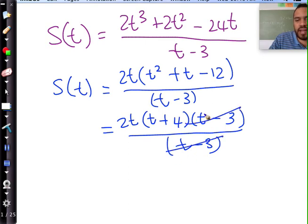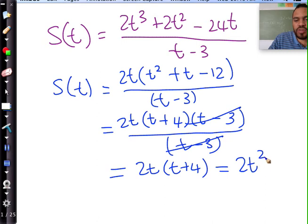You cancel that out and you're now left with 2t times by t plus 4 which you put in a mimic polynomial form which will give you 2t squared plus 8t. Now from this you can go and apply the power rule. How do we do that people?